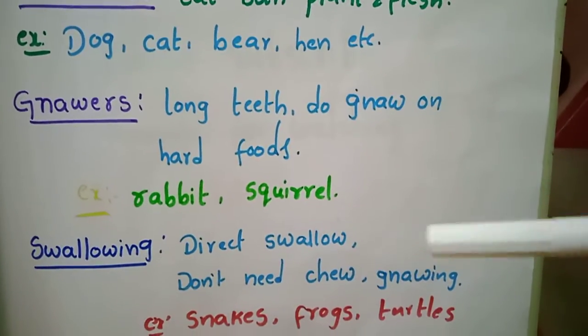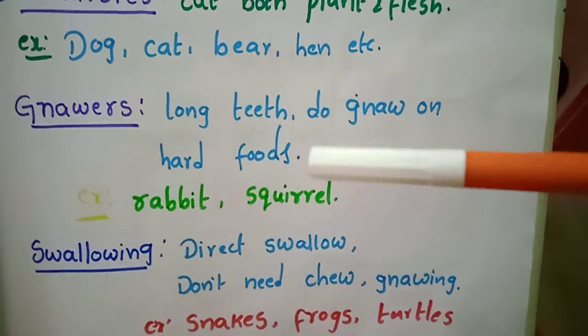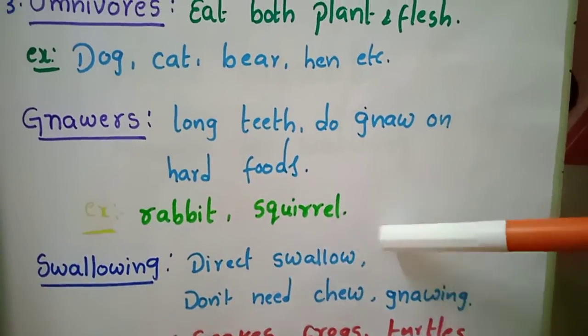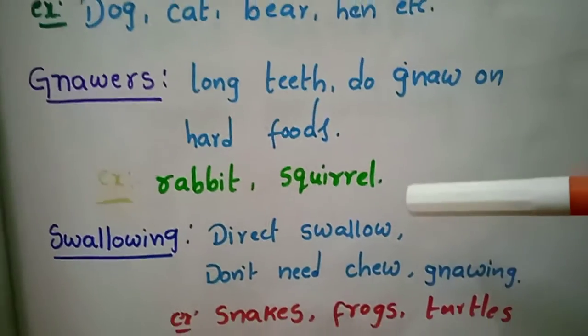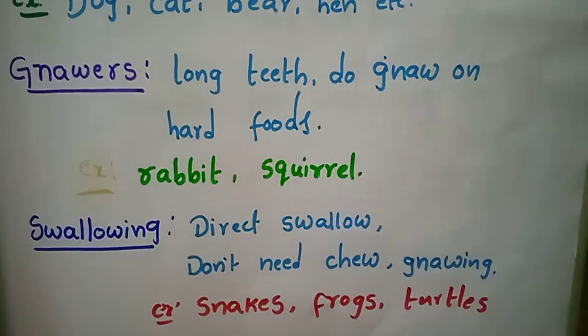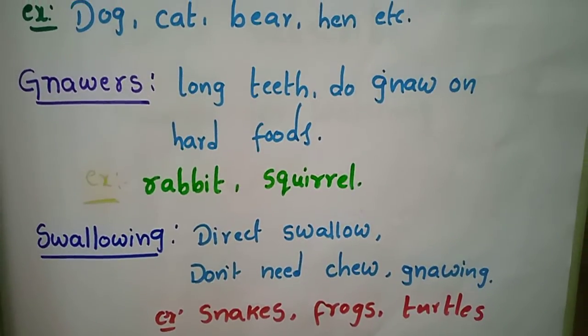Some animals swallow their food directly without chewing. They use their teeth only to catch prey and then swallow it whole. Examples include snakes, frogs, and turtles.